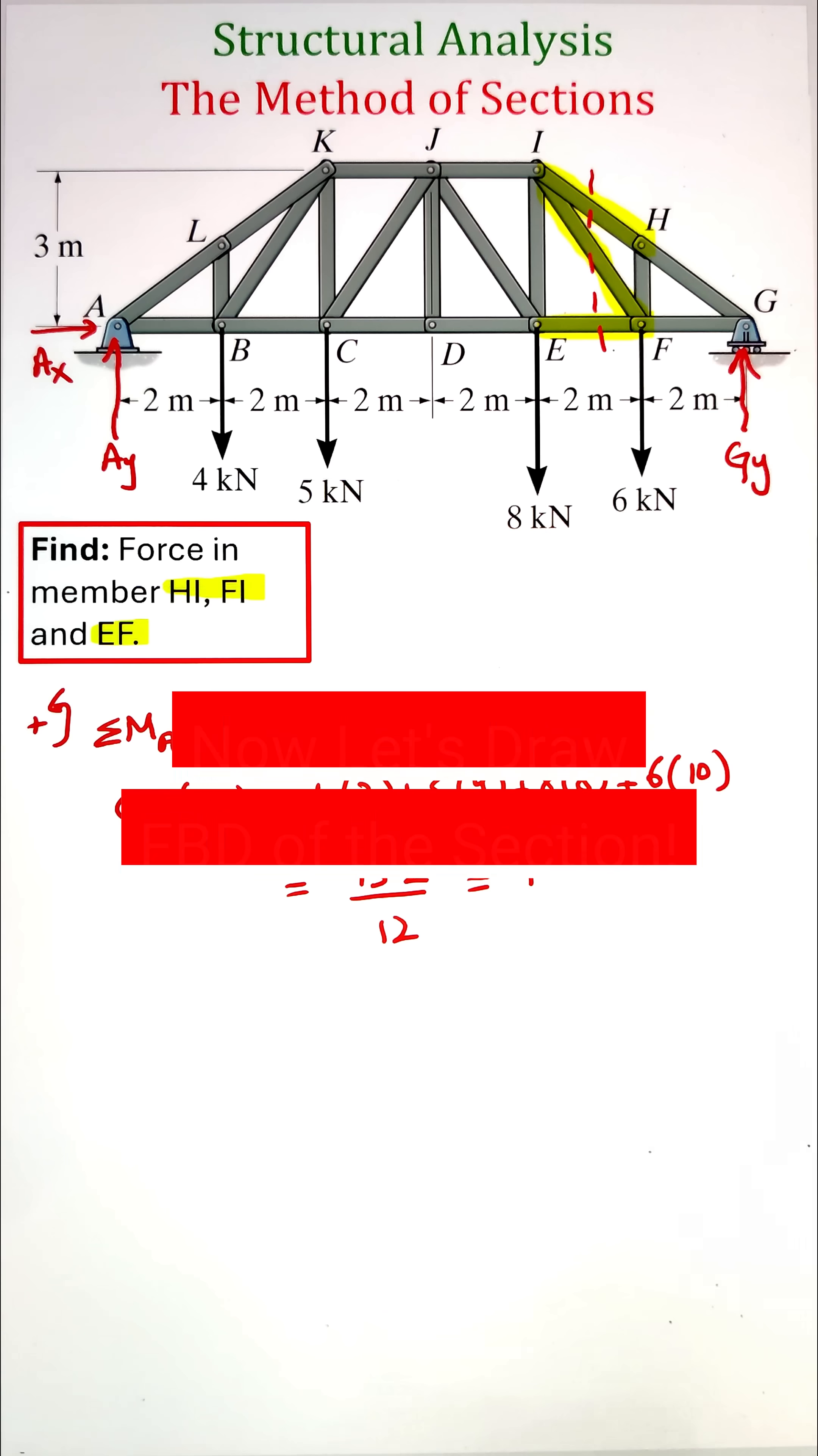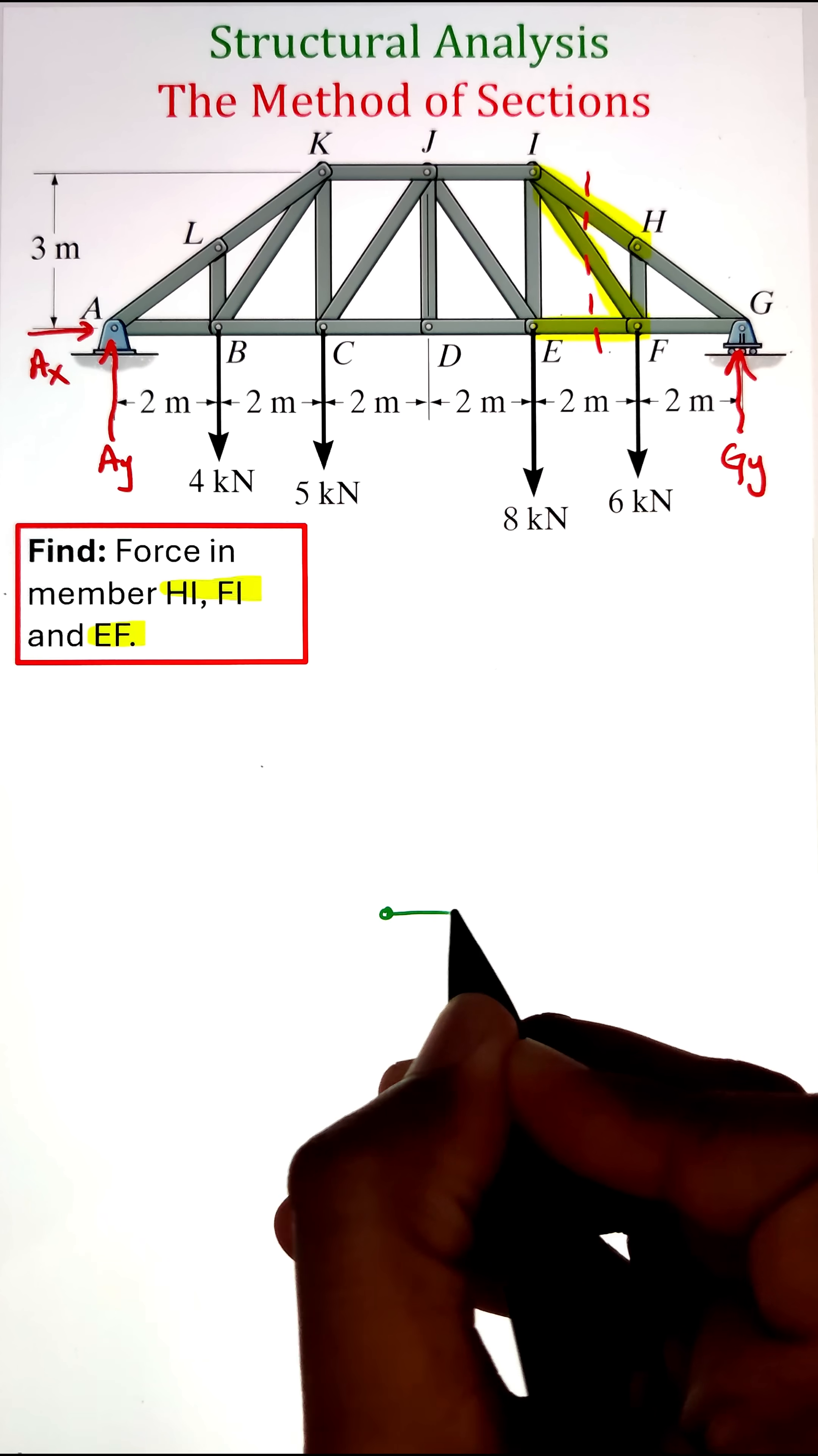Now let's draw the free body diagram of the smaller section. Since we have made a cut along members HI, FI, and EF, the internal forces will become exposed.